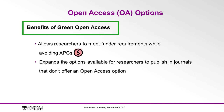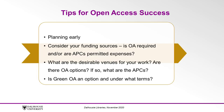Green open access may allow researchers to meet funder requirements while avoiding APCs. It may also expand the options available if a researcher wants to publish in a journal that doesn't offer an open access option. A bit of planning early on can help make your work open access go smoothly. When embarking on a new project, researchers should consider their possible funding sources — do those funders require open access or permit open access APCs as an expense? What are the desirable venues for the outputs of your project, and do they offer an open access option, and if so, what are the APCs?